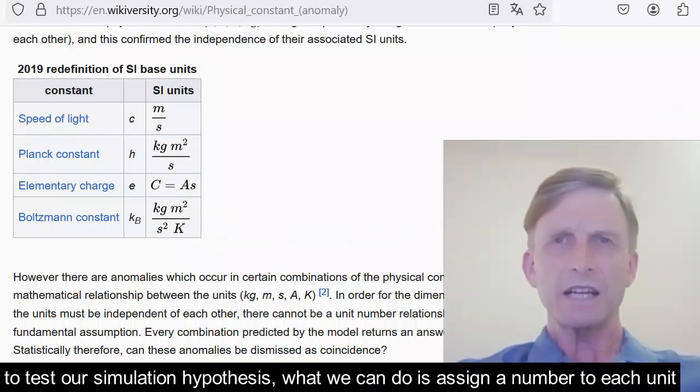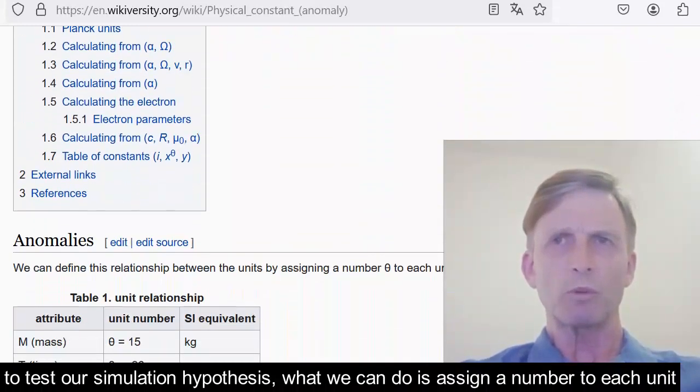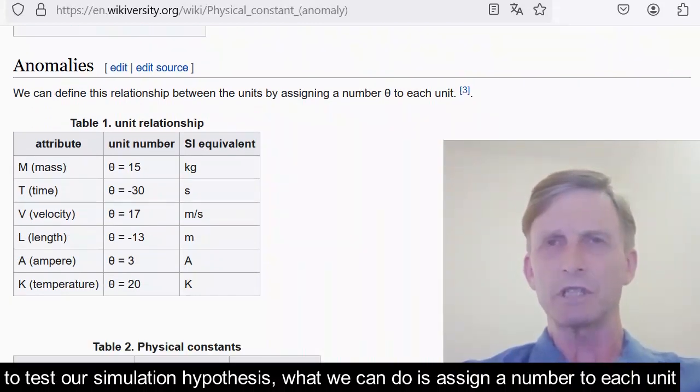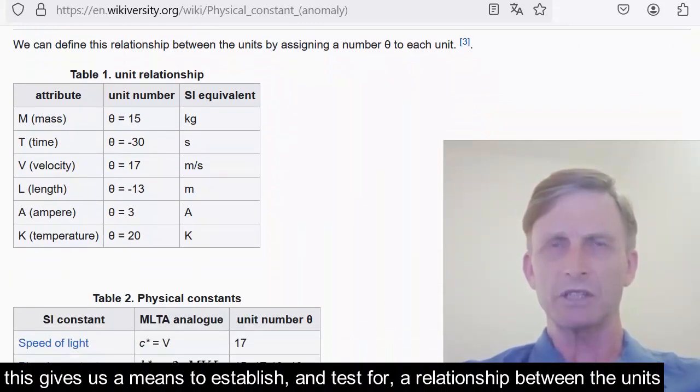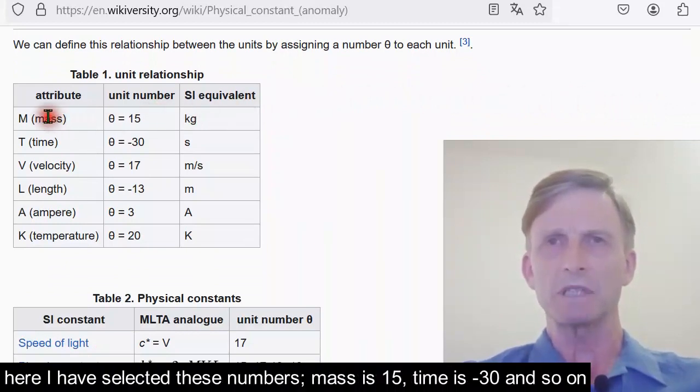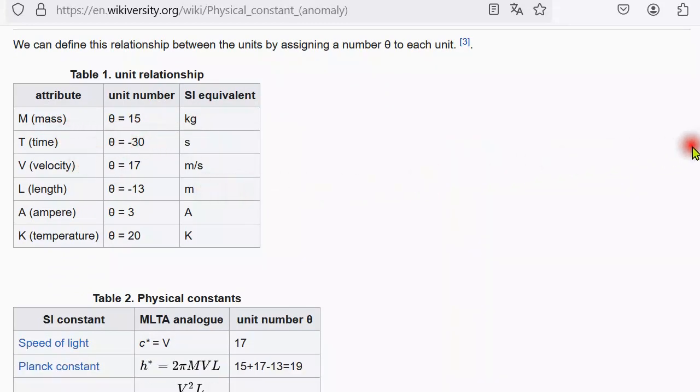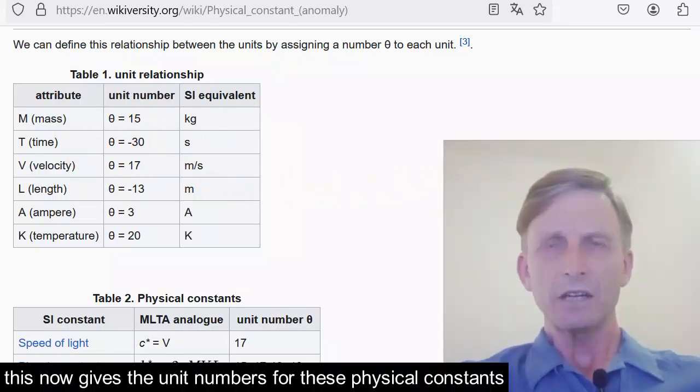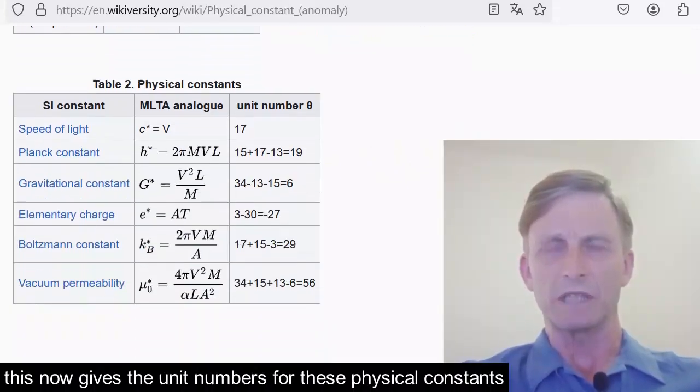To test our simulation hypothesis, what we can do is assign a number to each unit. This gives us a means to establish and test for a relationship between the units. Here I have selected these numbers: mass is 15, time is minus 30, and so on. This now gives us the unit numbers for these physical constants.